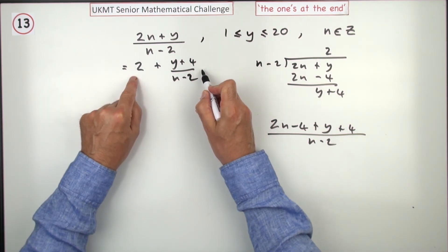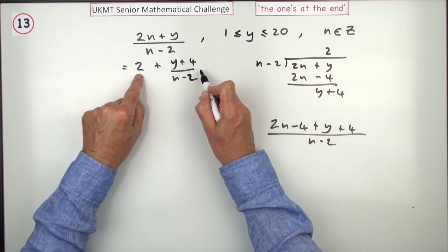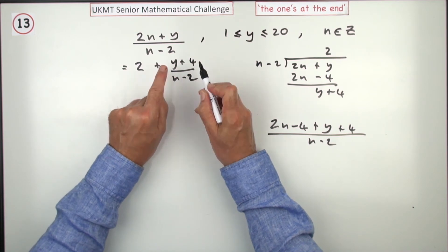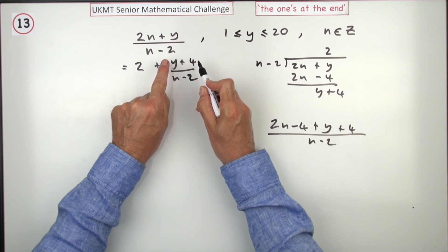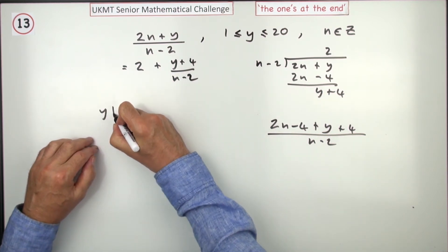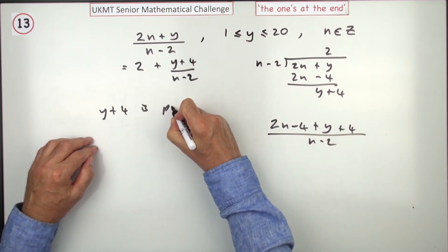Now, what this says is, if this is an integer, well, since that's a whole number, this must be a whole number, so this must still be the case then. The top of this must be prime. y plus 4 is prime.